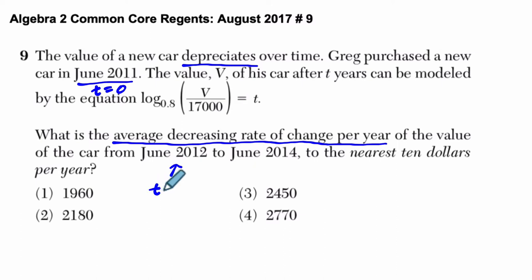So that's where T is one, because one year has passed since he bought it, to June 2014, which is where T equals three, because three years have passed since he bought it. And they want the answer in nearest $10 per year. What's going on in this problem?